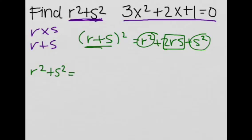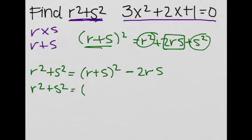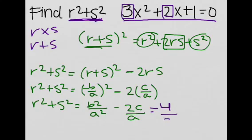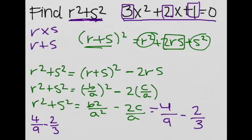So r squared plus s squared is equal to r plus s squared minus 2rs. We can rewrite this as negative b over a squared minus 2 times c over a, which simplifies to b squared over a squared minus 2c over a. This equals b squared, which is 4 (since 2 squared is 4), over a squared, which is 9 (since 3 squared is 9), minus 2 times c, which is 1, so 2 over a, which is 3. So we get 4 ninths minus 2 thirds, which equals 4 ninths minus 6 ninths, which is negative 2 ninths.